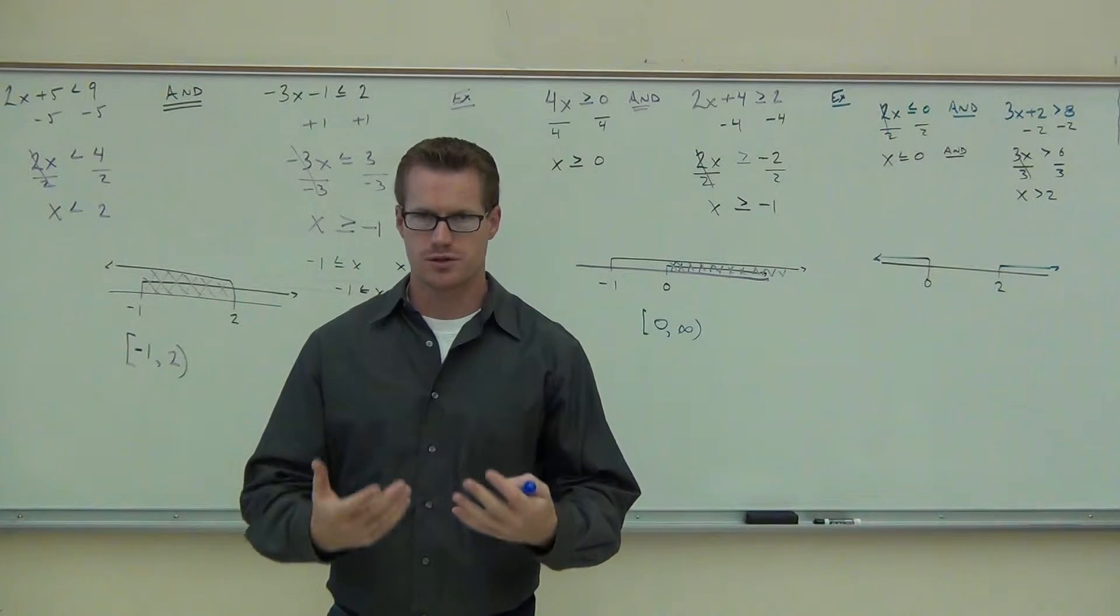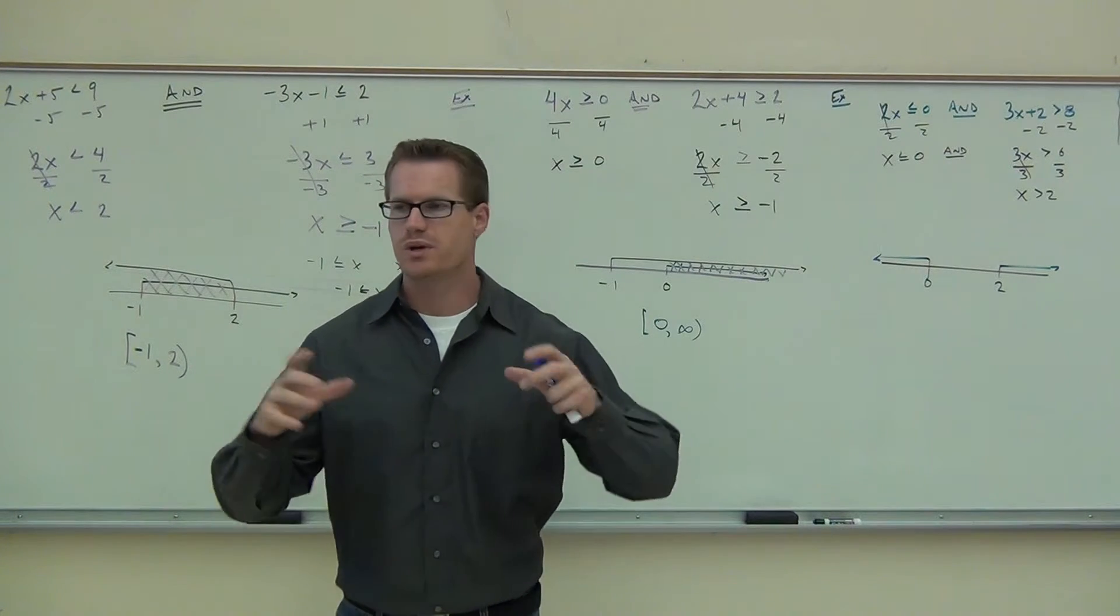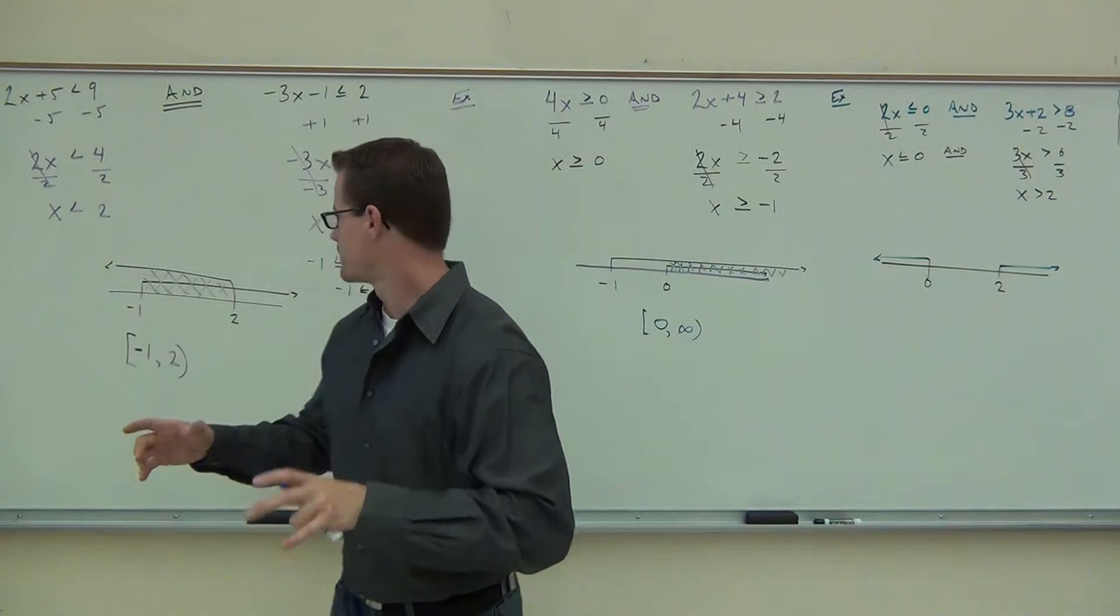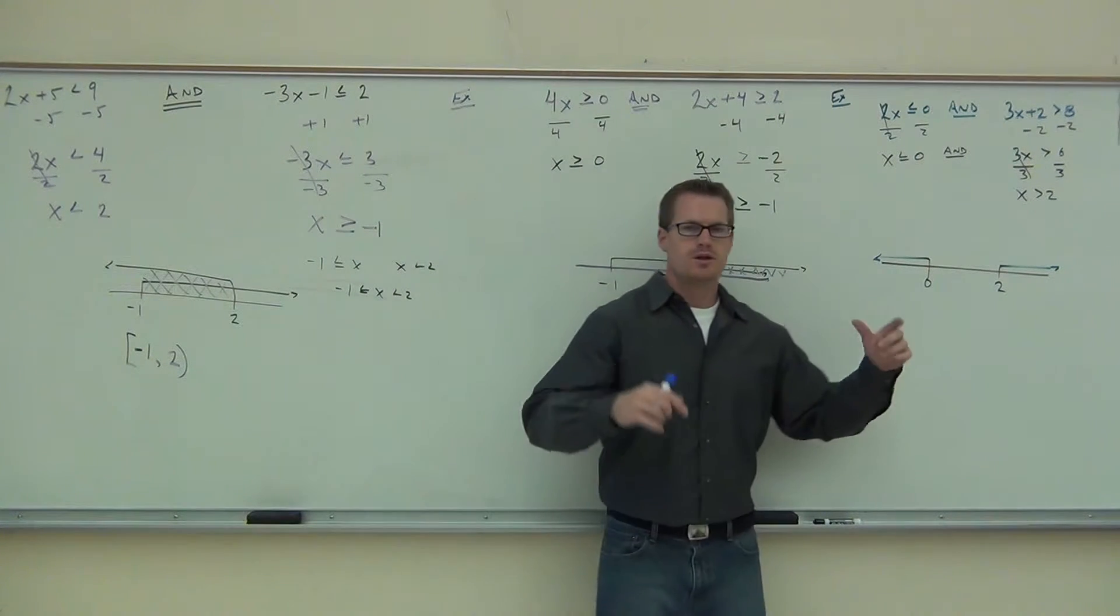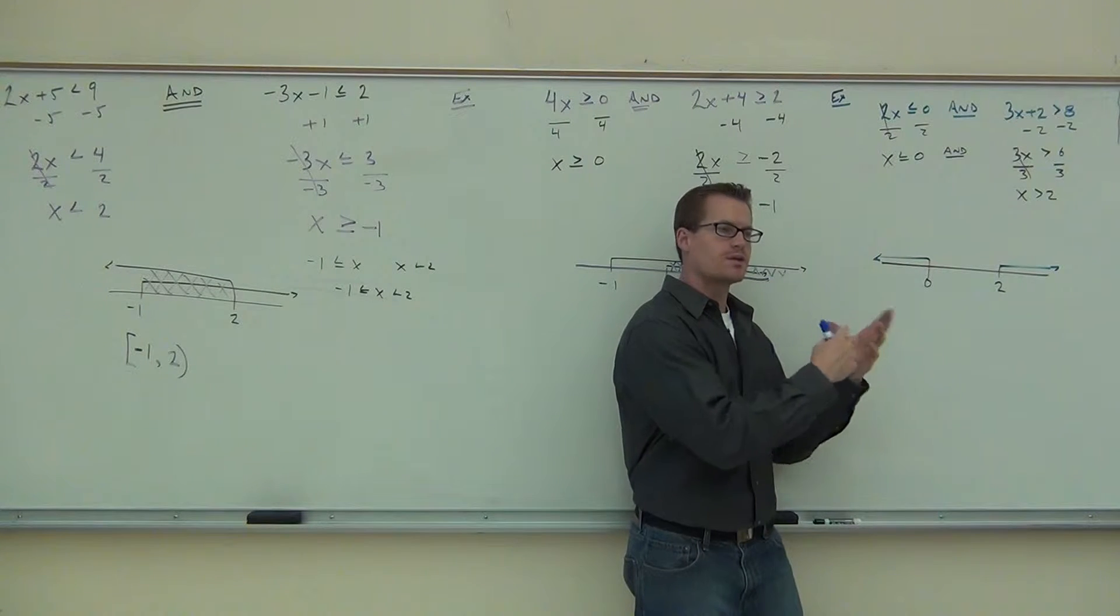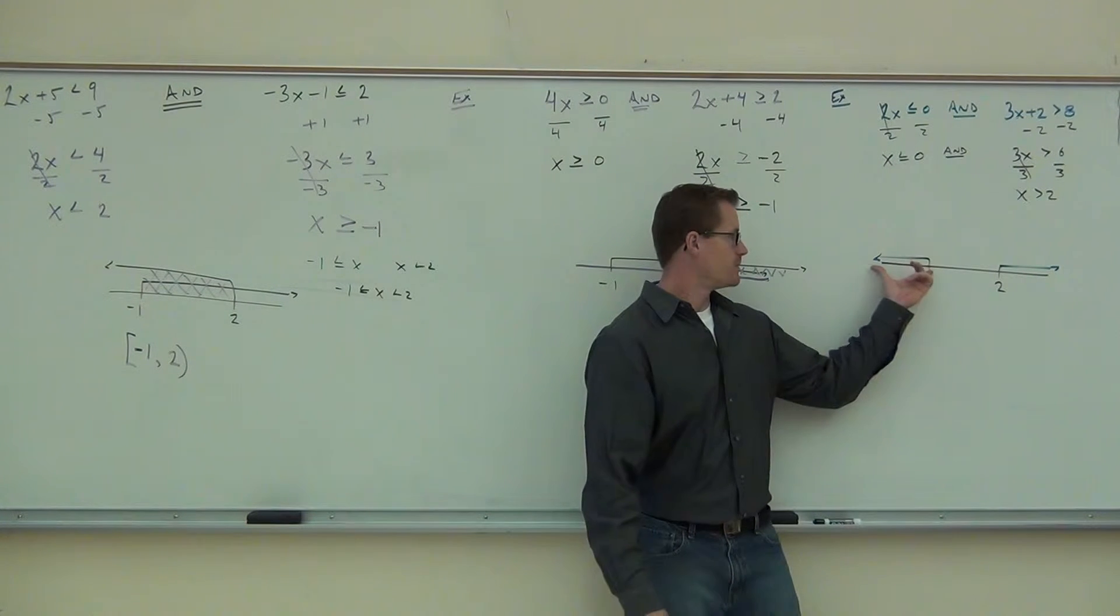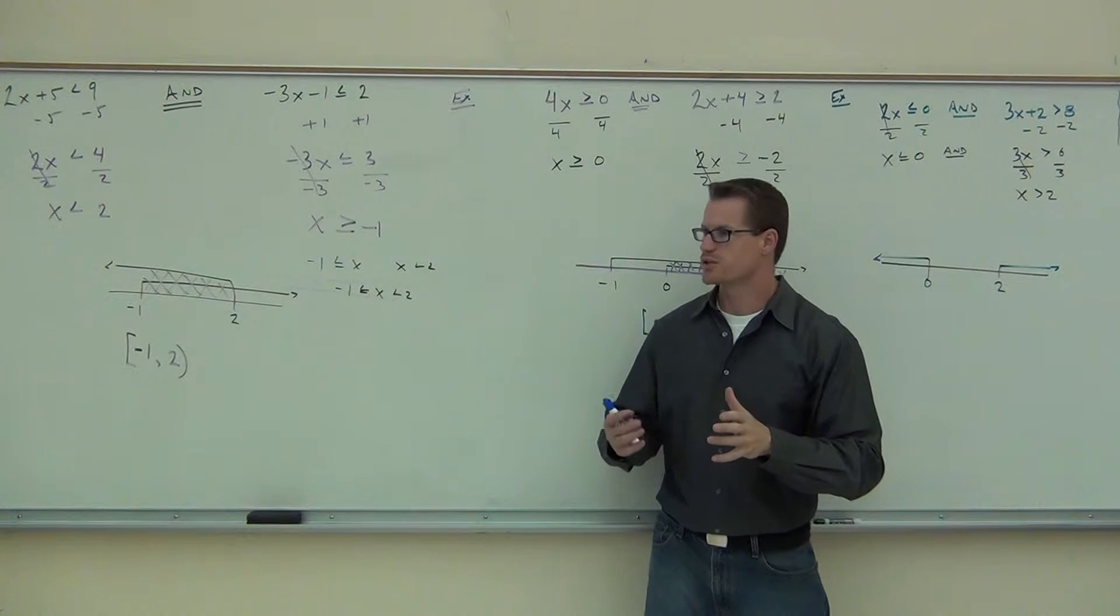And means crossover. And means an intersection. And means where these two inequalities have the same numbers. Do we have a crossover, a connection, an intersection, or where these have the same numbers? No. They're not both here. They're not both here. They're not both here. This has no intersection whatsoever.